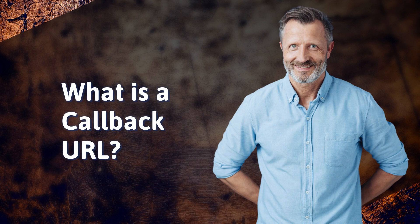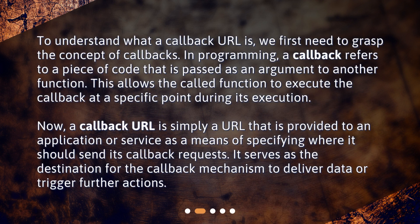What is a callback URL? To understand what a callback URL is, we first need to grasp the concept of callbacks. In programming, a callback refers to a piece of code that is passed as an argument to another function. This allows the called function to execute the callback at a specific point during its execution. A callback URL is simply a URL provided to an application or service as a means of specifying where it should send its callback requests. It serves as the destination for the callback mechanism to deliver data or trigger further actions.